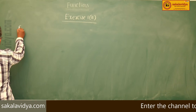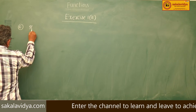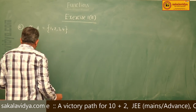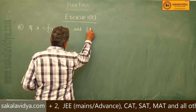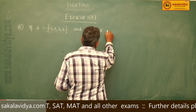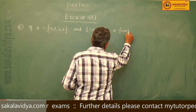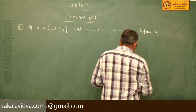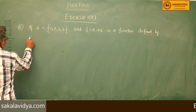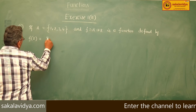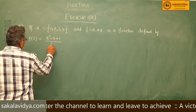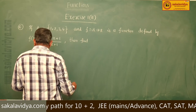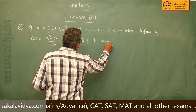Sixth problem. If A equals {1, 2, 3, 4} and f maps A to R is a function defined by f(x) = (x² - x + 1) / (x + 1), then find the range of f.